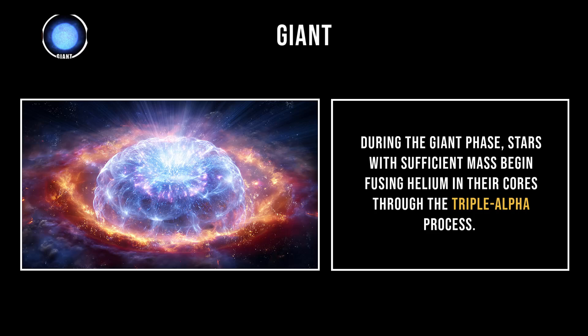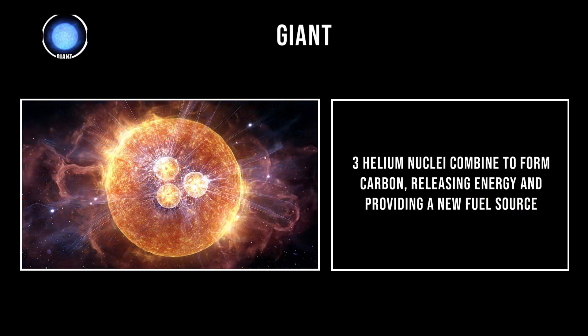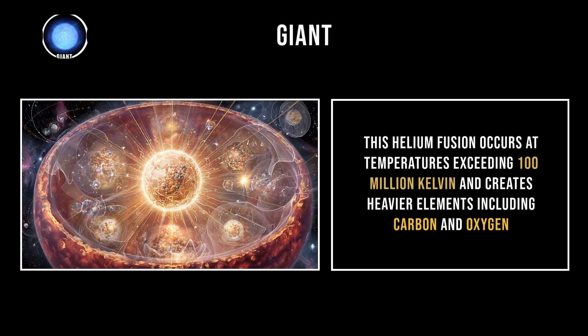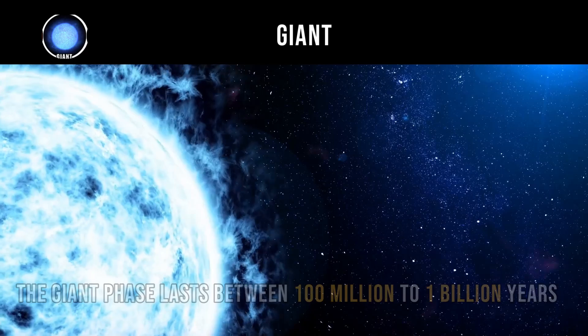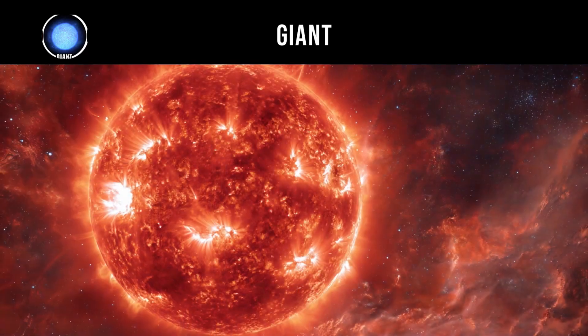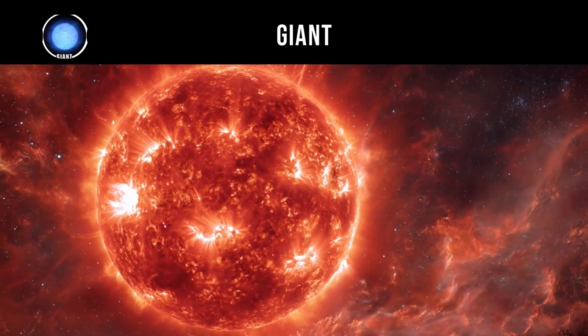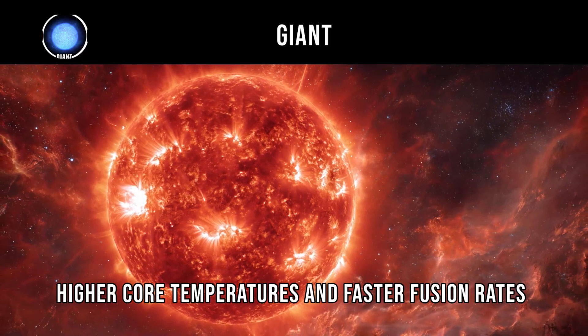During the giant phase, stars with sufficient mass begin fusing helium in their cores through the triple alpha process. Three helium nuclei combine to form carbon, releasing energy and providing a new fuel source. This helium fusion occurs at temperatures exceeding 100 million Kelvin and creates heavier elements including carbon and oxygen. The giant phase lasts between 100 million to 1 billion years, depending on the star's mass, with more massive stars progressing through this phase more quickly.